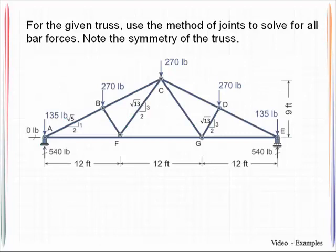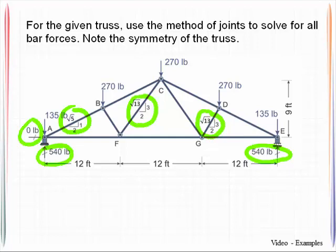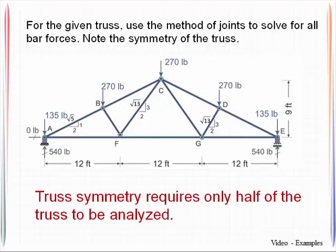We will look at this particular truss, for which we have already identified the reactions and the orientation of typical members. You've got the loads being applied at the panel points, and so we should be ready to move on. But before we do any calculations, let's note that the truss is actually symmetric, and this only requires us to analyze half of the truss. For example, if we find the force in bar AB, we will then automatically know what the force is in bar DE.